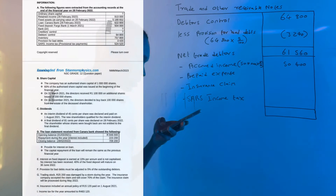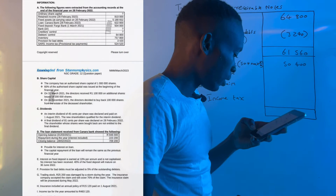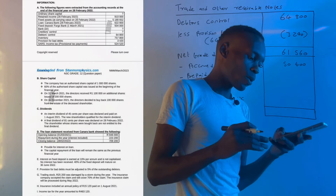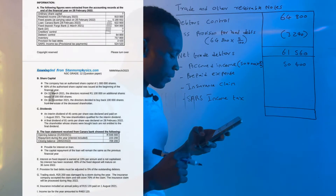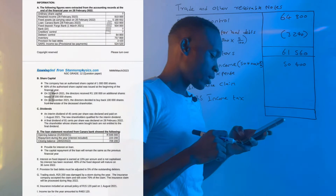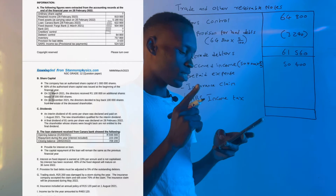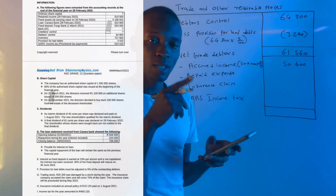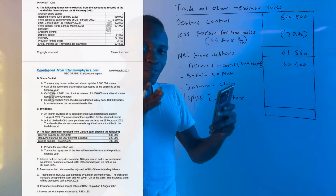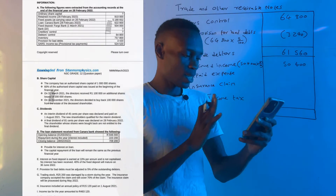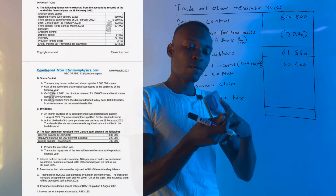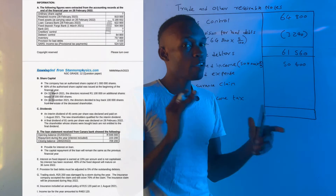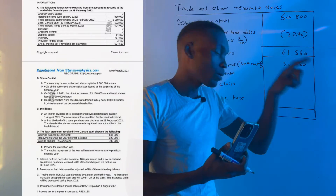For prepaid expenses, we look at transaction H: insurance includes an annual policy of R15,120 paid on 1 August 2021. The policy covers twelve months, but our year ends 28 February 2022. The months that fall within this financial year are August, September, October, November, December, January, and February — only seven months.